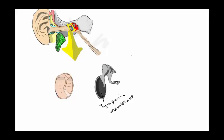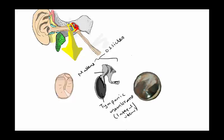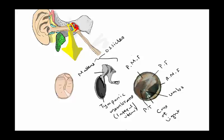Looking at a lateral view of the tympanic membrane: the tympanic membrane is visible, and posteriorly attached in the posterior side are the ossicles, with the first bone being the malleus. The attachment with the tympanic membrane leads into folds. From the anterior view we can identify the posterior mallular fold, anterior mallular fold, cone of light, umbo, pars flaccida, and pars tensa.